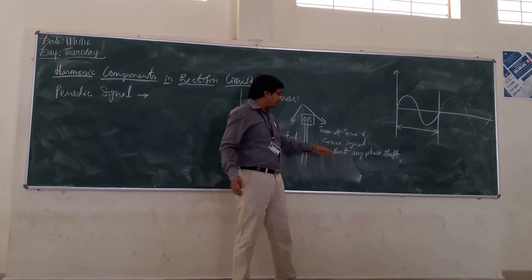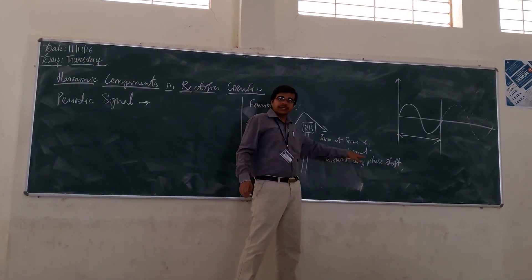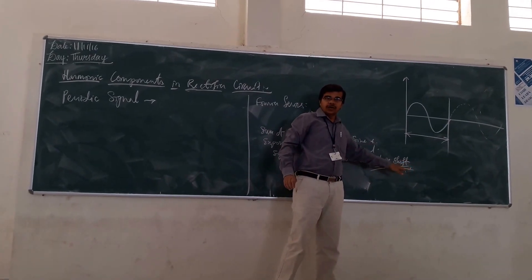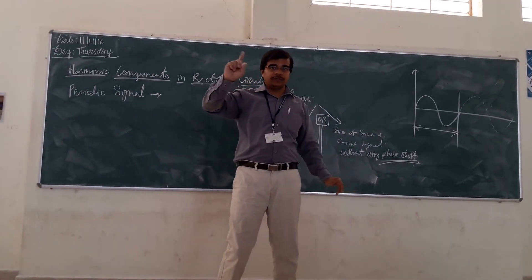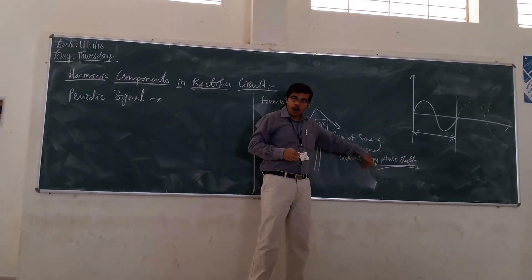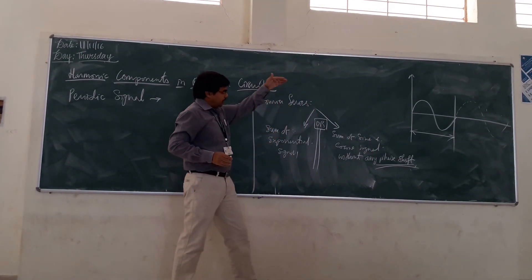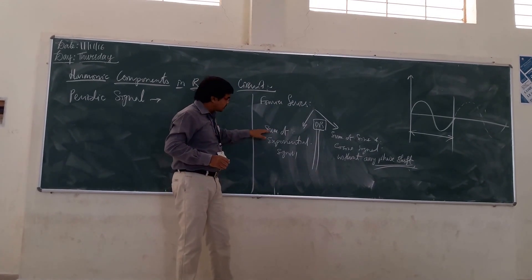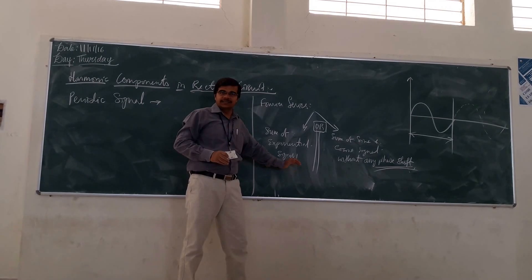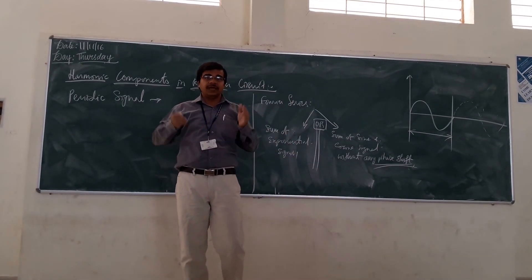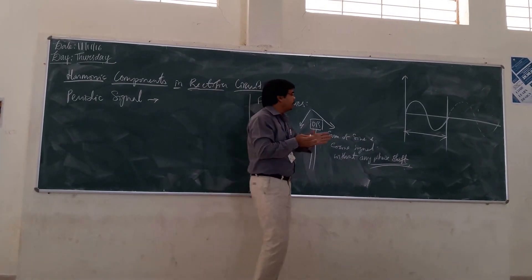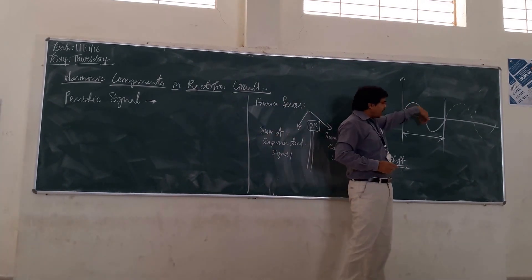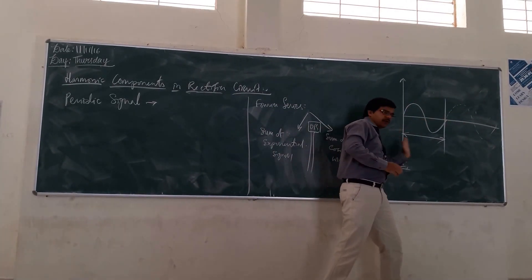You are having a number of sinusoidal signals and a number of cosine signals. The condition is there should not be any phase shift — you should have the constant phase angle. That periodic signal can be decomposed into a sum of exponential signals. We can add a number of exponential signals and when we are adding them up, we will get that periodic signal.